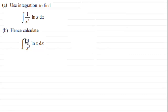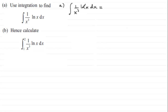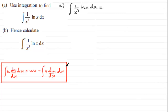Let's see how we go about this. For part a, we've got the integral of 1 over x cubed multiplied by the natural log of x, integrated with respect to x. What I notice is that we've got a product of two functions of x, so we have to use integration by parts.